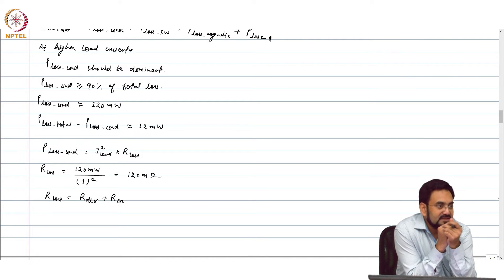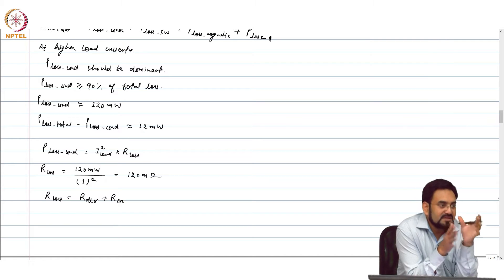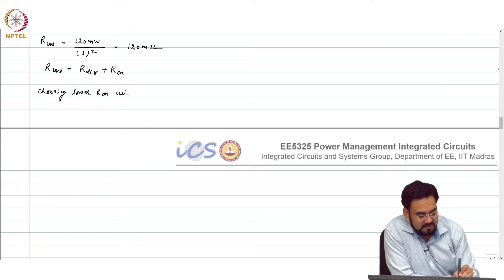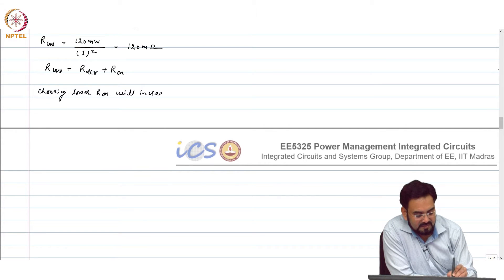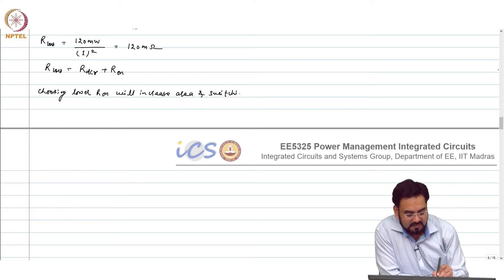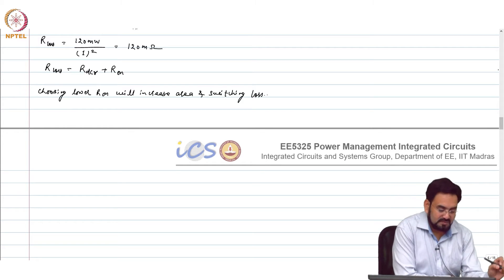So first you try to find the inductor with the smallest DCR that is the first thing you should do. But if something is not available below, let's say 50 milliohms, then you do not have any choice. So first we try to find the inductor with the smallest DCR possible. Choosing smaller or lower R_on will increase area and switching loss.